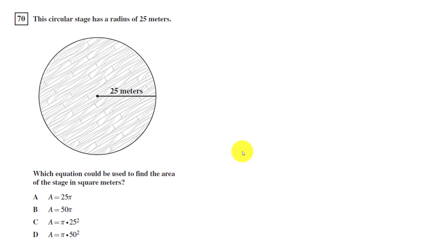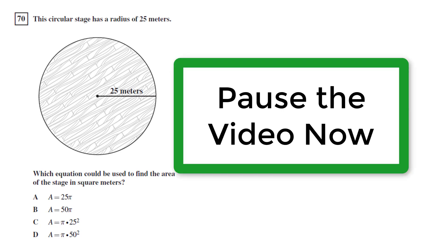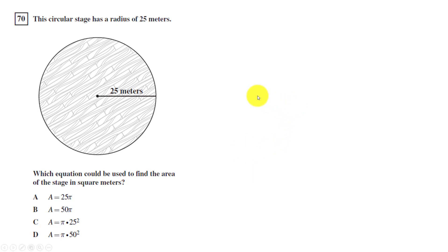Read this question carefully, pause the video, give it a try on your own, then I'll explain the answer. This circular stage has a radius of 25 meters. So again, we have some important information here. Radius of 25 meters indicated by the line here. Which equation could be used to find the area of the stage in square meters? So, in previous questions we were talking about circumference, which is the distance around the circle. This is talking about the area, which I highlighted here in green.